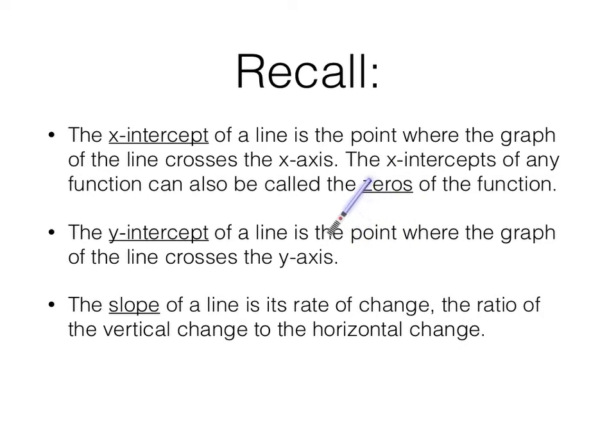So zeros and x-intercepts are the same thing, and that tells you something about the line because it tells you where the line is on the coordinate plane. The y-intercept of a line is the point where the graph of the line crosses the y-axis. Y-intercepts don't have any other special names like zeros, like x-intercepts do. They're just the y-intercept.